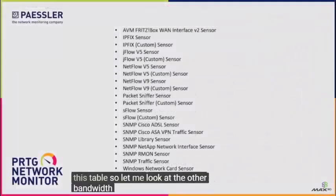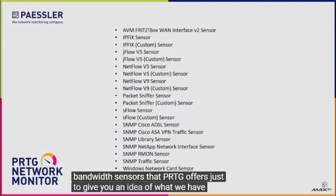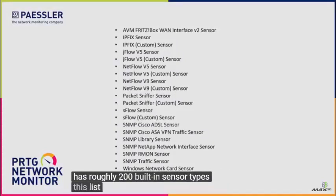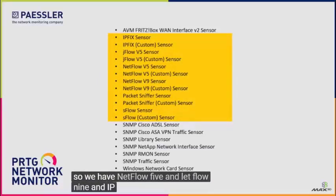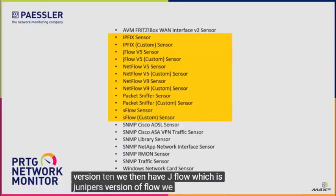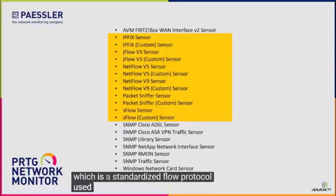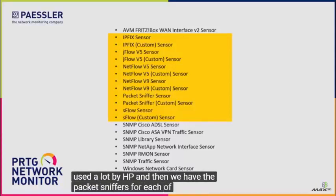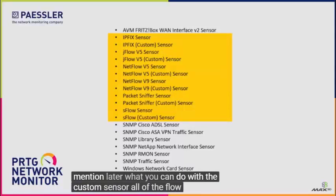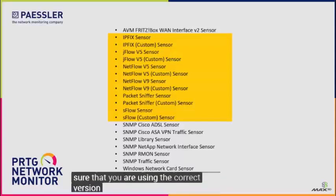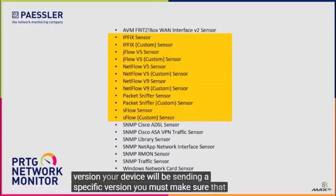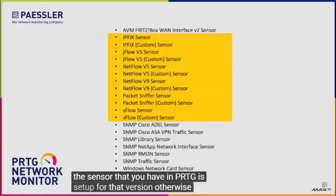PRTG has roughly 200 built-in sensor types. This list shows the ones relevant to bandwidth, and the yellow box shows the ones we're going to look at today. We have NetFlow 5, NetFlow 9, and IPFIX — which is like NetFlow version 10. We then have JFlow, which is Juniper's version of flow, and SFlow, a standardized flow protocol used a lot by HP. Then we have the packet sniffers. For each of these there's also a custom sensor. All of the flow ones work the same way, so I'm going to show you NetFlow 9. When setting them up, make sure you are using the correct version — your device will be sending a specific version, and the sensor in PRTG must match that version, otherwise the sensor won't work.